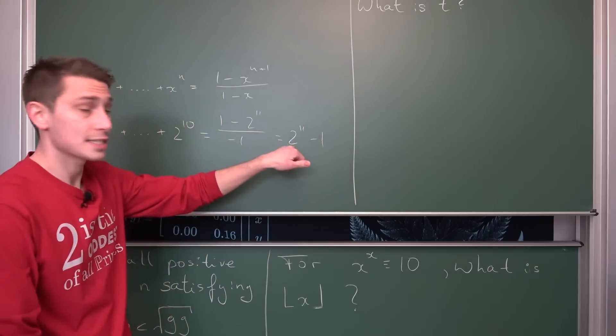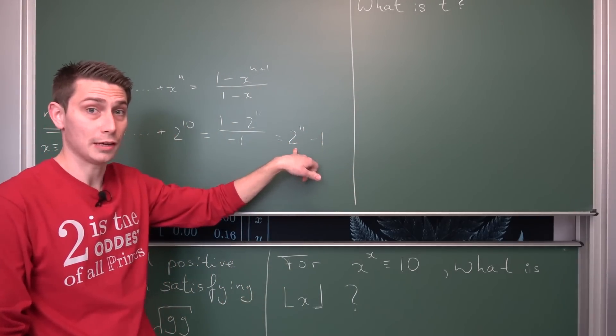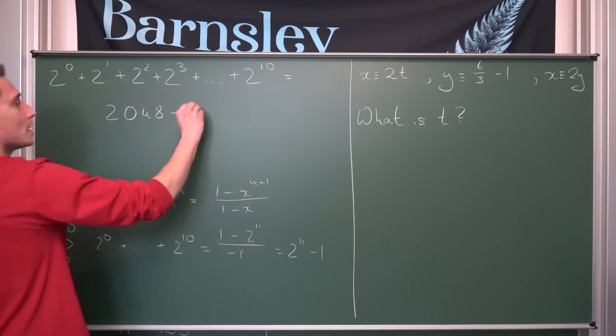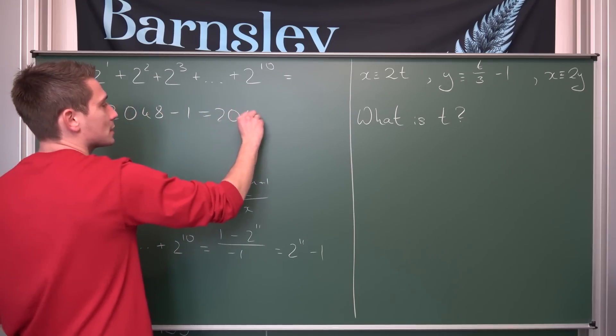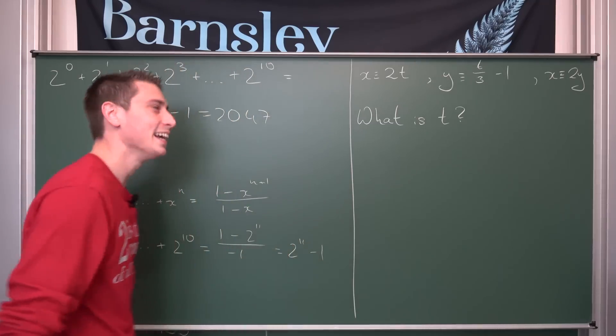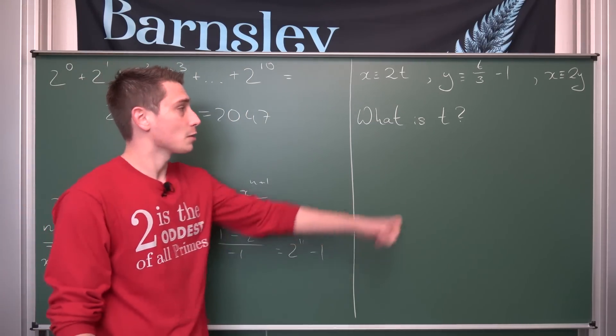So this times 2 results in 2 to the 11th power resulting overall in 2048 minus 1 which is nothing but 2047 and hence we're done. Quite easy right but cute. I like puzzles like those.